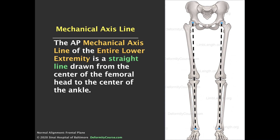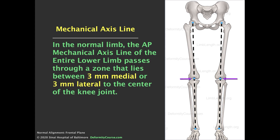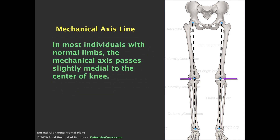To return to the mechanical axis of the entire lower extremity — a straight line from the center of the femoral head down to the center of the ankle joint. In the normal limb, this line passes within 3 to 4 millimeters of the center of the knee joint. On average, this is slightly medial to the center in asymptomatic patients.